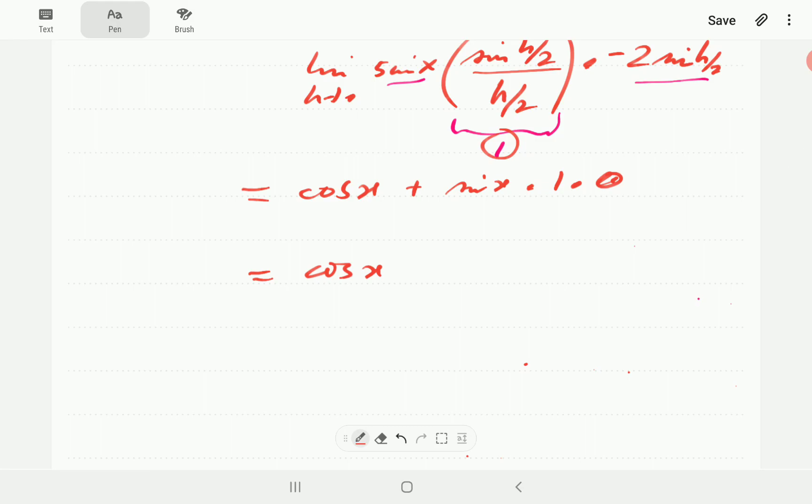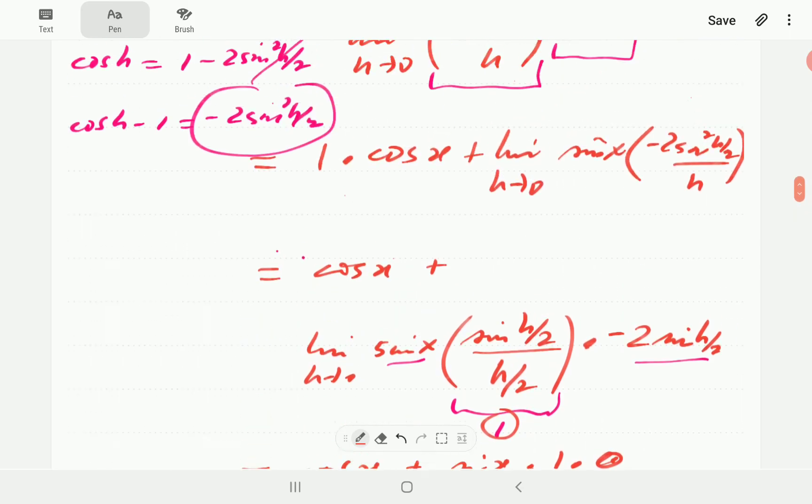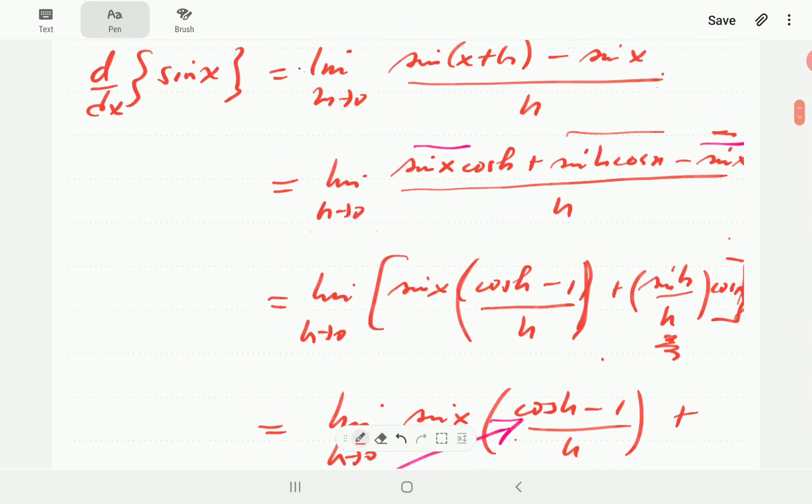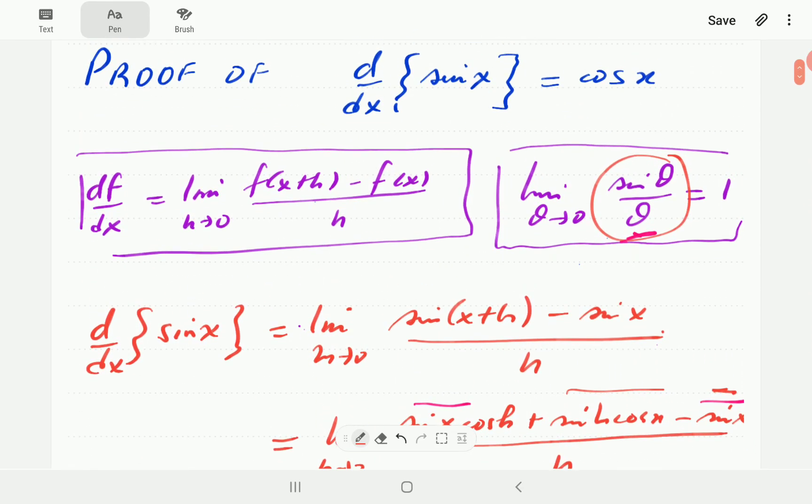So there you go. That's the proof of the derivative of sine x is equal to cosine x.